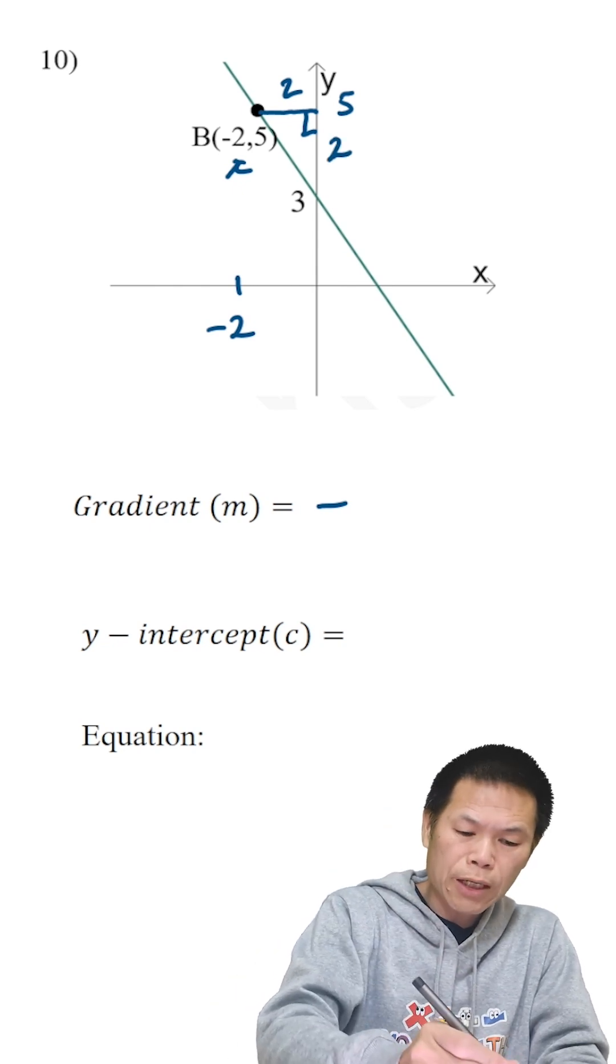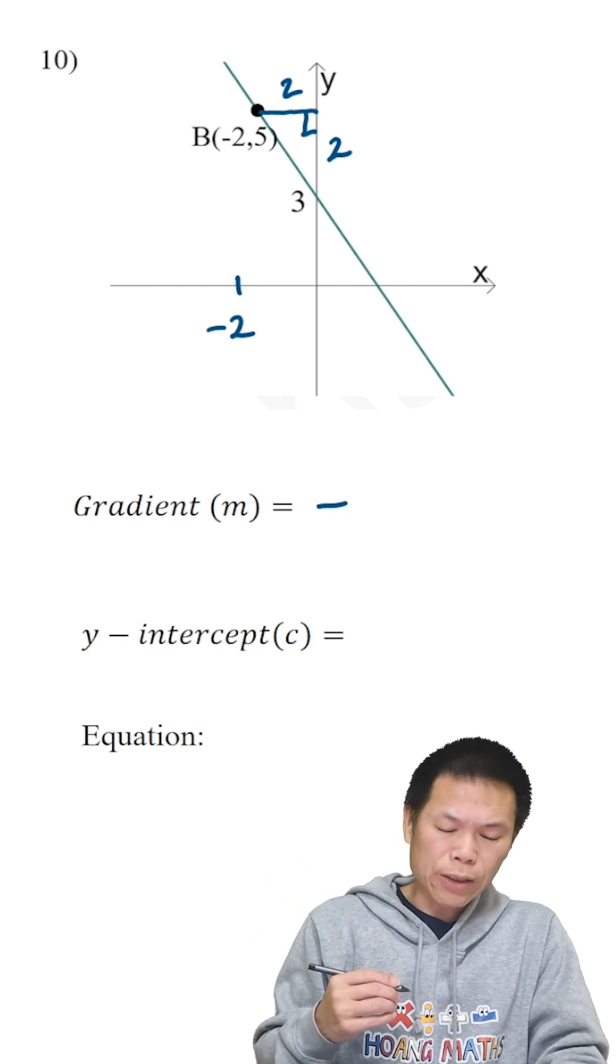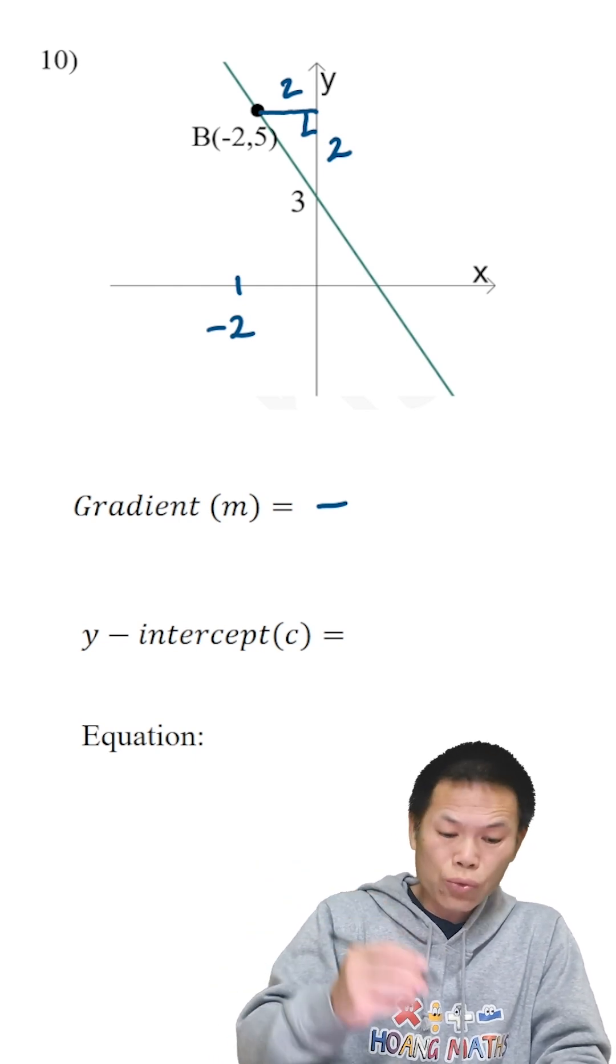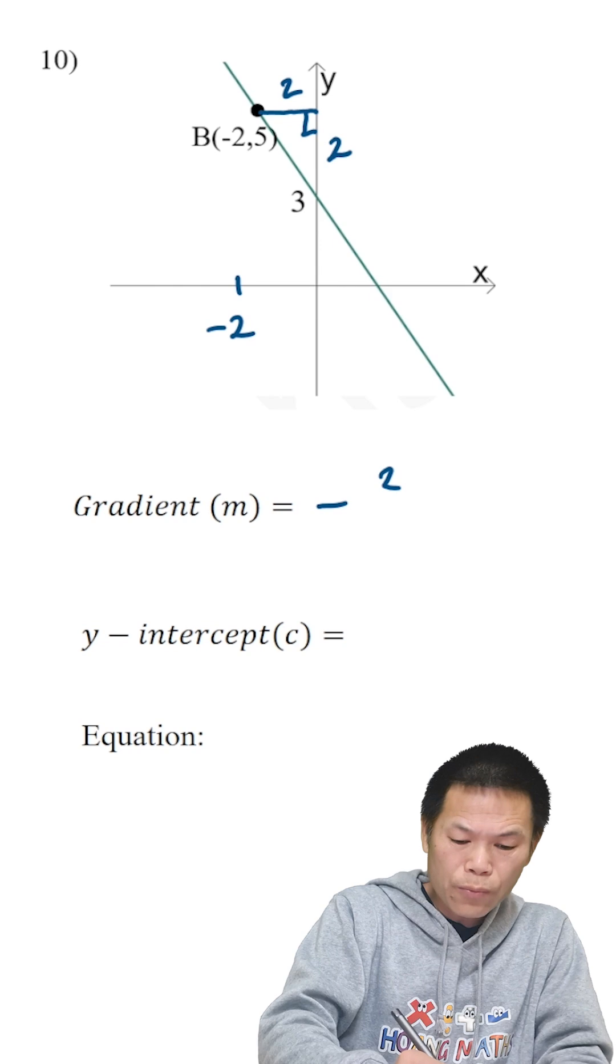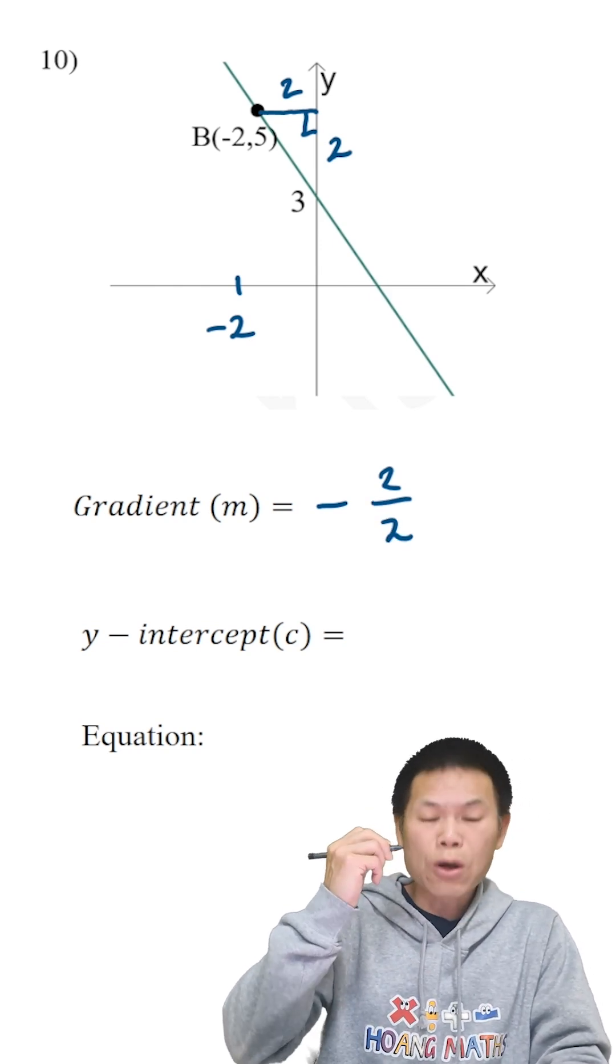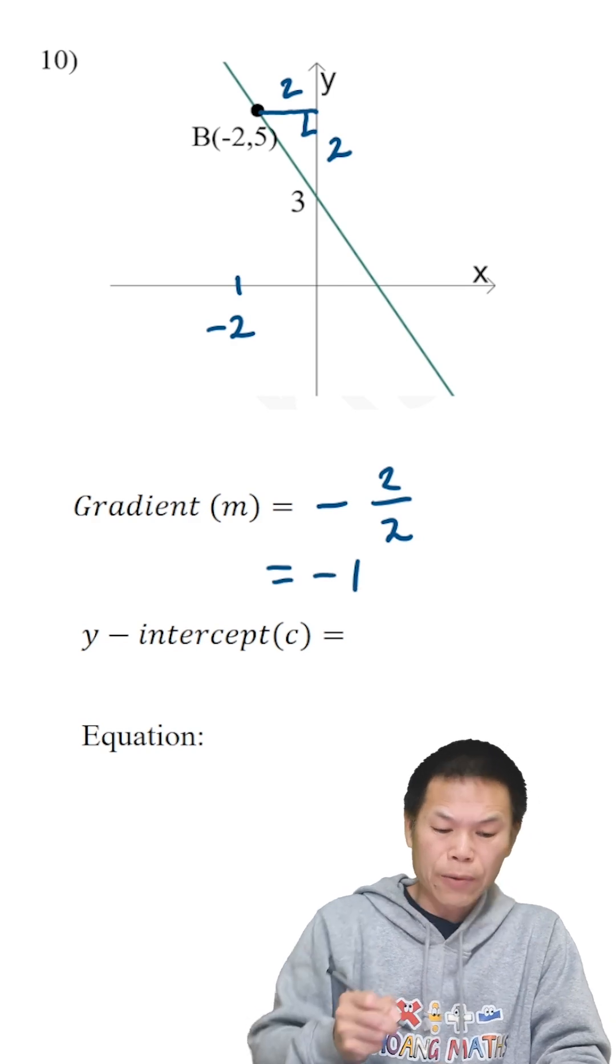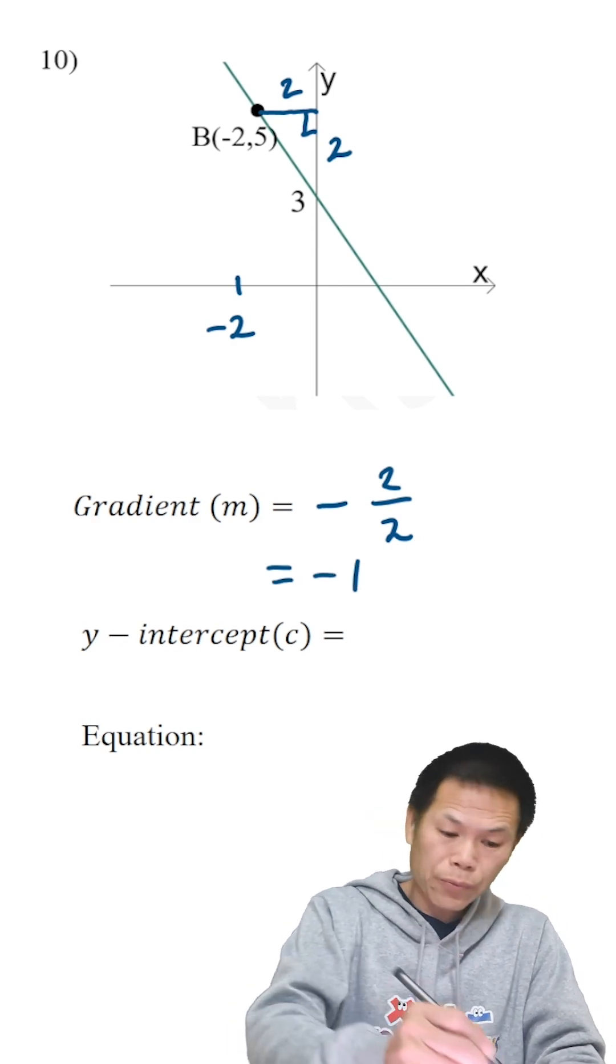So going up by 2. Let me clear this otherwise too many numbers. So now rise is 2, run is 2, so 2 over 2. So 2 over 2 is 1, so the answer is negative 1. And y-intercept is 3.